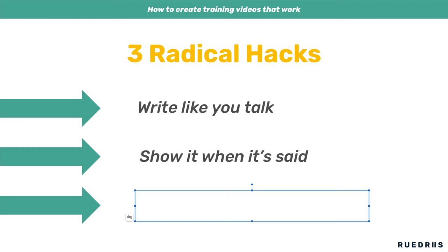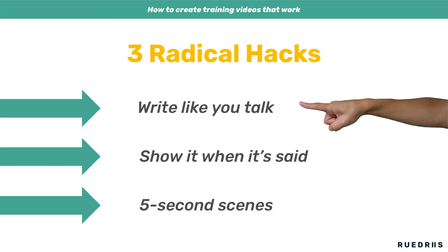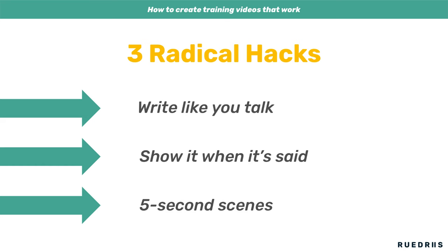All you need to take from this example is to strive for shorter scenes. A simple benchmark to follow is five-second scenes — meaning flip the page every five seconds. If they manage to write like you talk, with lots of shorter sentences, it's all going to fit when one sentence gets one scene. And if they show it when it's said, the voiceover has probably moved on to something new after five seconds anyway.